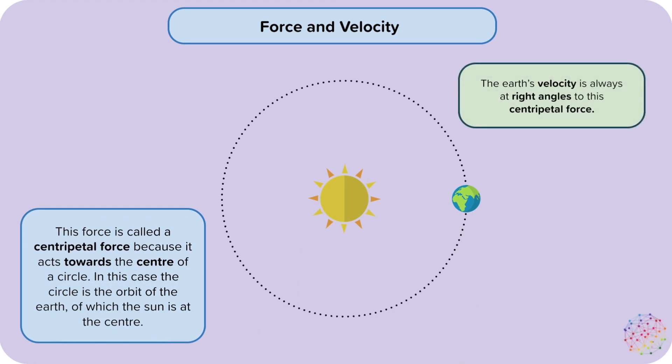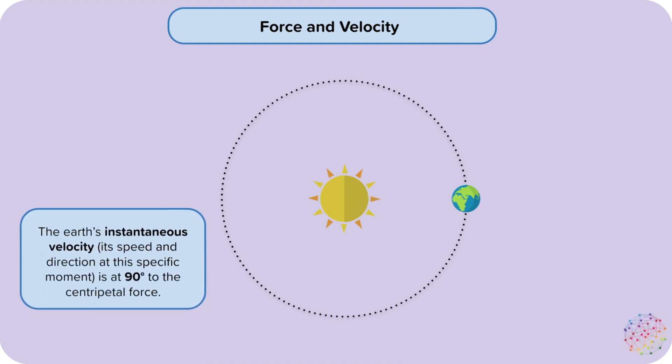The Earth's velocity is always at right angles to this centripetal force. The Earth's instantaneous velocity, which is its speed and direction at this specific moment, is at 90 degrees to the centripetal force.